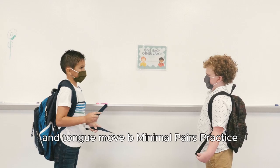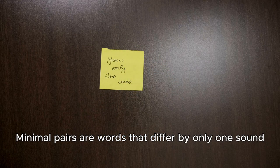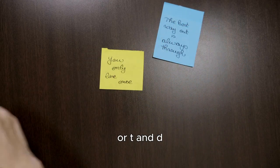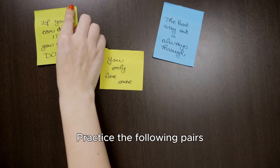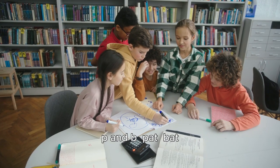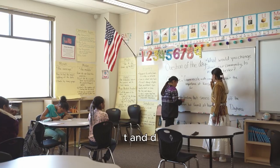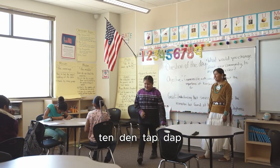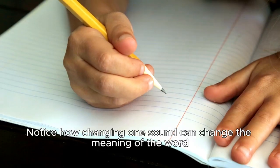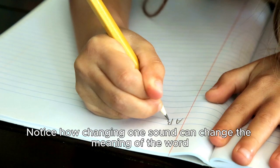Minimal pairs practice. Minimal pairs are words that differ by only one sound, such as P and B, or T and D. Practice the following pairs. P and B: pat and bat, pit and bit, pack and back. T and D: ten and den, tap and dap, tin and din. Say each pair of words out loud. Notice how changing one sound can change the meaning of the word.